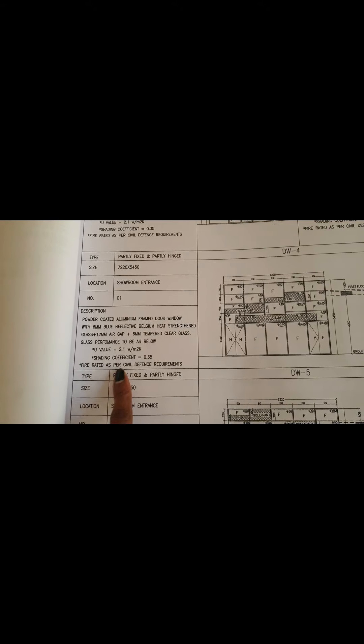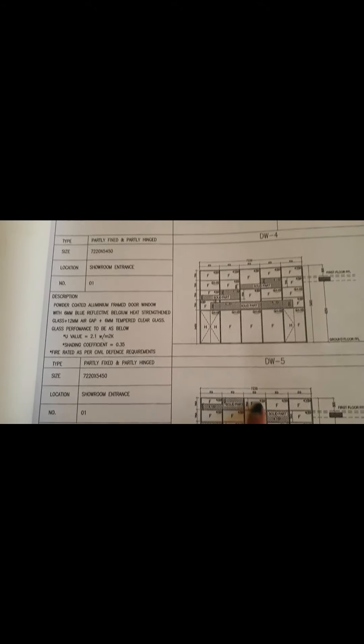Here also there is one hinged door with a fixed portion. The next one is a big curtain wall with one single-leaf hinged door and one double-leaf hinged door. In elevation, hinged doors and swing doors look the same — from plan only we can identify whether it is a swing door or hinged door. Sometimes specification will also state this. Here it says partly fixed and partly hinged, so it's a hinged door. The showroom runs number quantity is one.